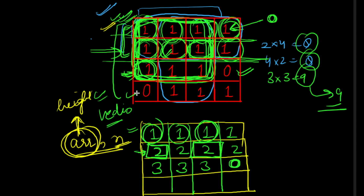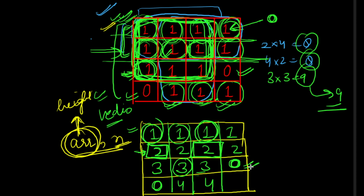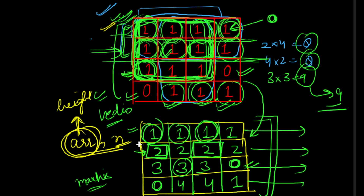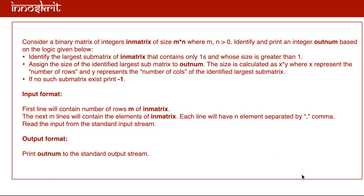If the value in the original matrix is zero, we simply assign zero to that position. For non-zero values, we add the current element to the value from the previous row — giving heights like three, four, and so on. This is how we form the new height matrix from the input matrix, then pass each row to the Maximum Area of Histogram function.